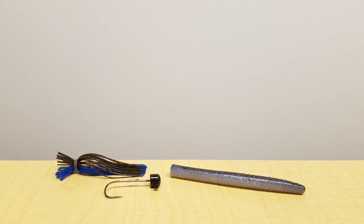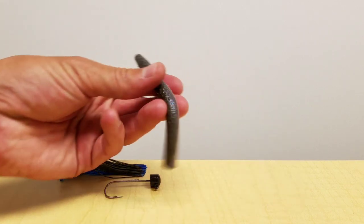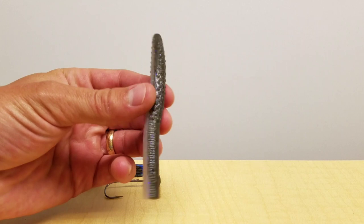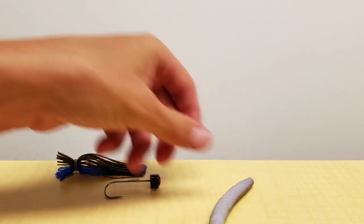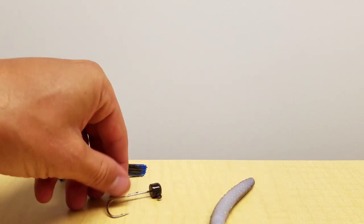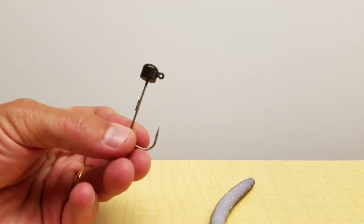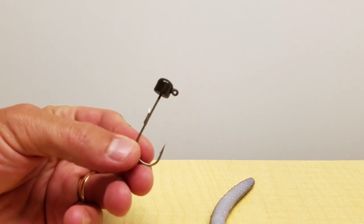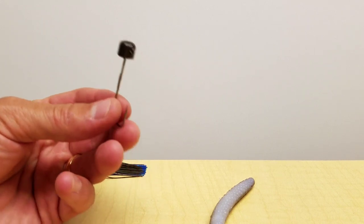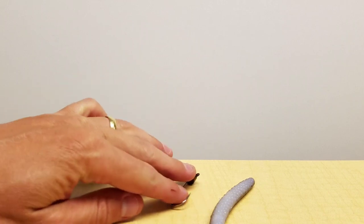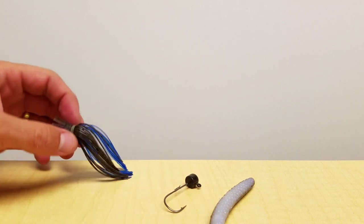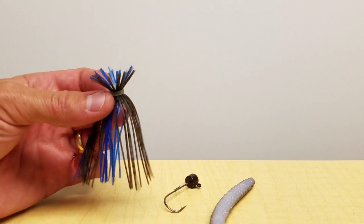So what I want to show you today is a combination of a Ned Rig and a jig using all Z-Man products. So this right here is the big TRD in the deal. This right here is the power finesse shrooms jig head in a one-fifth ounce weight, so almost a quarter ounce on that. And this is the Z-Man Easy Skirt finesse.